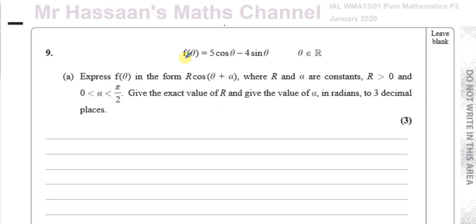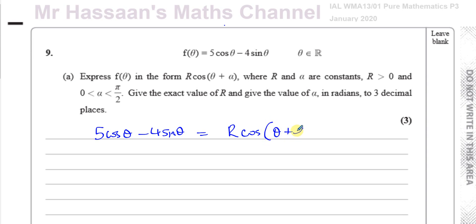We're told to express f(θ), which is 5·cosθ minus 4·sinθ, in the form r·cos(θ + α). We need to find the value of r and α, where r is greater than 0 and is a constant, and α is an angle between 0 and π/2 radians. We need to find the exact value of r and the value of α in radians to 3 decimal places. To do this, we need to compare the coefficients of the left side and the right side, but first we need to expand.